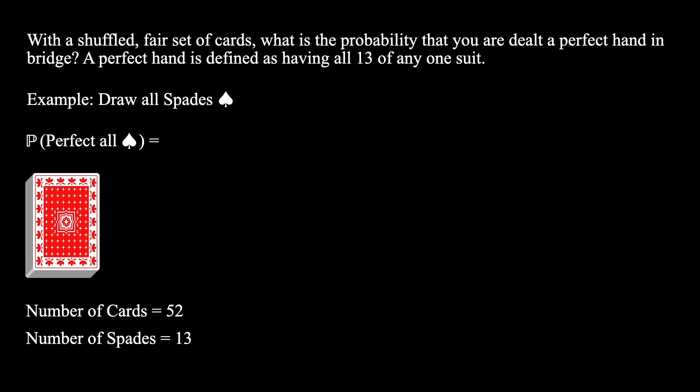Therefore, to start finding the probability of our perfect all spade hand, let's start by finding the probability that our first draw is a spade. Since there are 13 spades and 52 cards, this probability is simply 13 divided by 52.